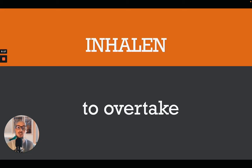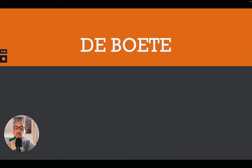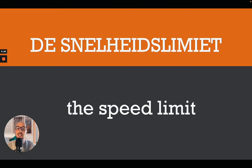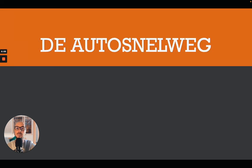If a car in front of you is driving a little bit slower, you can overtake it, and in Dutch we call that 'inhalen.' 'Inhalen' is a separable verb — if you're not sure what a separable verb is, click the following link where I made a video about conjugating and using them. If you drive too fast, you get a fine or traffic fine, and that would be 'de boete.' And of course there's a speed limit on many roads, and that would be 'de snelheidslimiet' — your speed limit.